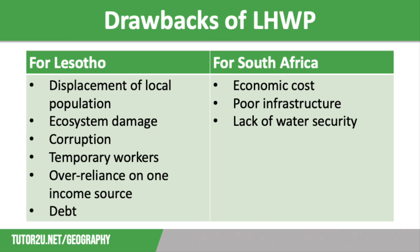However, as with any project of this scale, there are significant disadvantages. For Lesotho, there has been a major displacement of local population: 30,000 people had to be moved to make way for flooding behind the Katze, Mohale, and Polihali dams. This destroyed 17 villages and reduced farmland available to residents of 71 other villages.